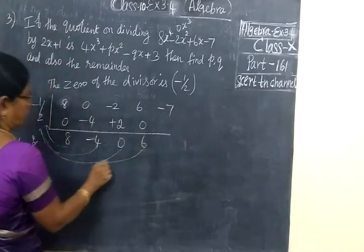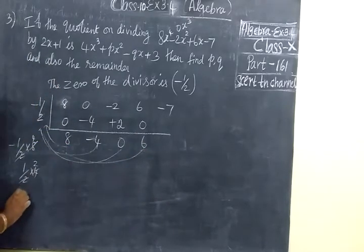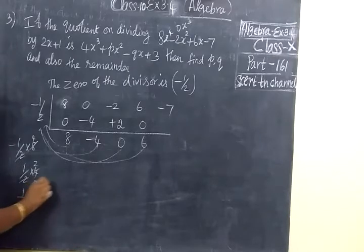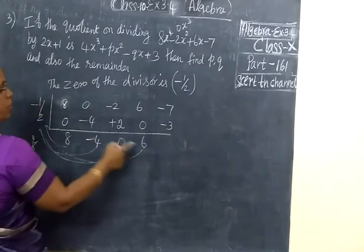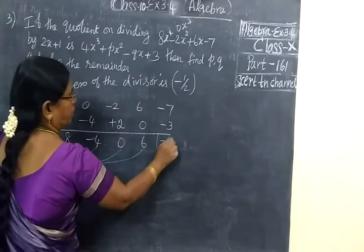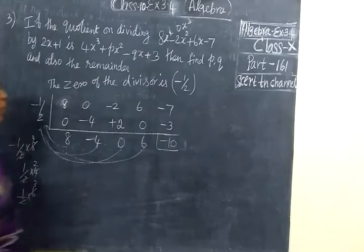Then 6. Now you multiply one half into 6. If you cancel 3, 2. So here you are writing minus 0. Because plus into minus is minus. So the remainder is minus 10.